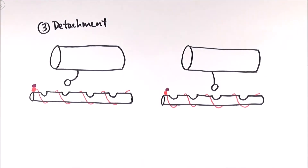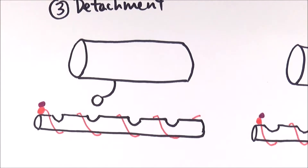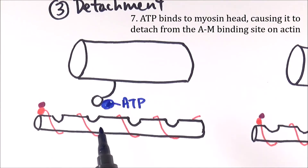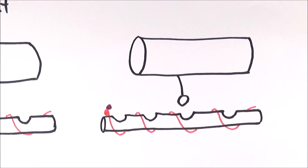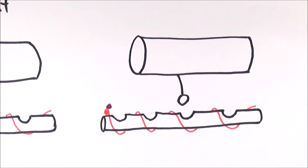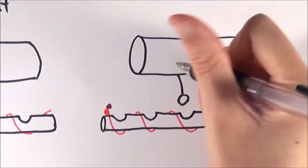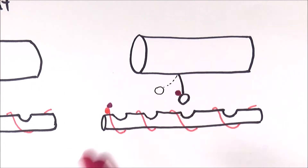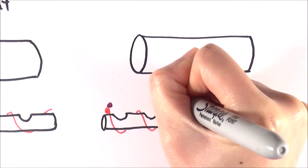Here comes the third stage, which is detachment. The myosin head flexes and pulls the actin filament along, releasing the ADP. Because ADP is being released, ATP can now bind to it. The binding of ATP actually releases the myosin head from the binding site. Once it detaches, you need to return the myosin head back to its original position in order for it to pull the actin further along. So before it was in this particular position, as you can see in the dotted line here. Now a calcium ion comes along and binds to the myosin head.